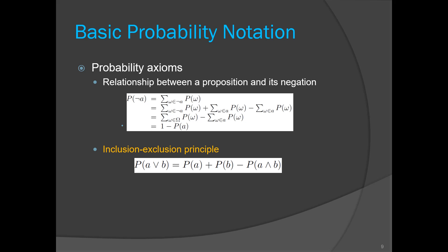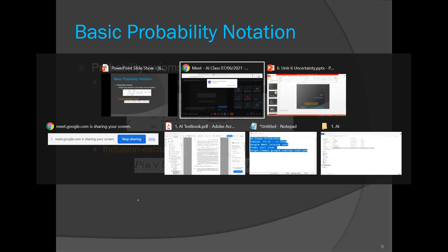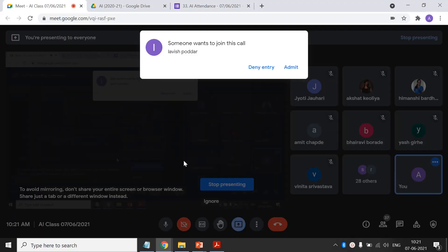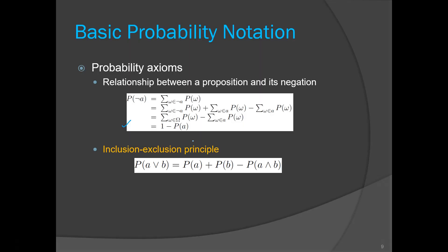We also know that the probability of the negation of A equals 1 minus the probability of A, because the summation of all events is 1. If the event is A, the other event will be not-A. We also discussed the inclusion-exclusion principle.